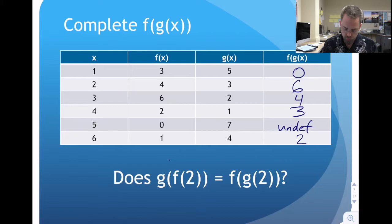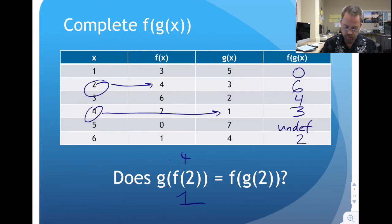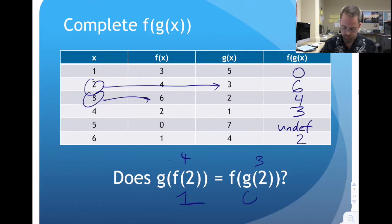This is an analogy for these functions do different stuff to the input and their output will be different. So f of 2 we can see is 4 and g of 4 we can see is 1. What is g of 2? We take 2, plug it into g, that gets us 3, and f of 3 is 6. And no, they are not equal, not anywhere close. So this is not reversible.